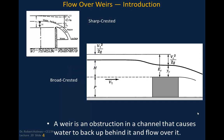A weir is an obstruction placed in a channel that causes water to back up behind it and flow over it. Typically, what we're looking for with these weirs is to induce critical depth over the weir. We discussed this in earlier lectures using the specific energy diagram to reason through what height you'd need for the obstruction to force critical depth.